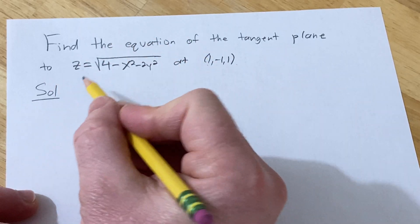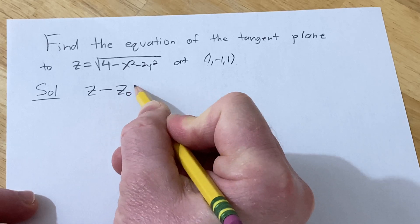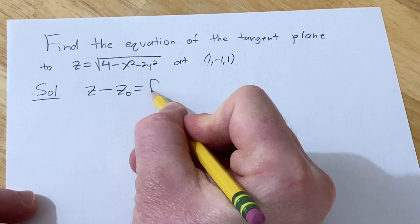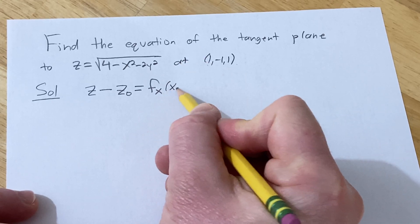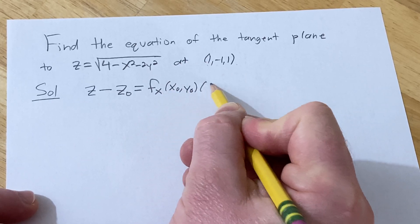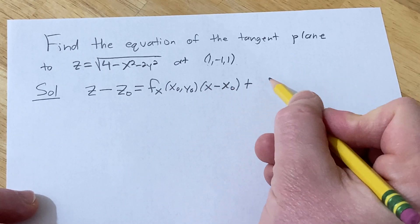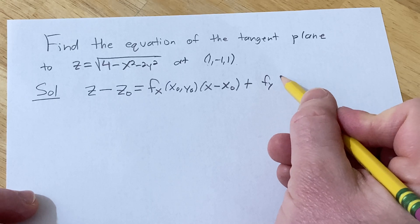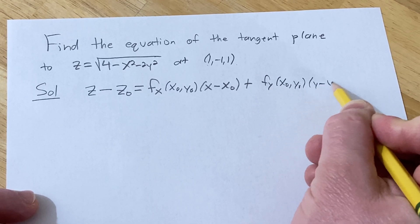So the formula we're going to use is z minus z0 equals the partial derivative of f with respect to x at (x0, y0) times (x minus x0) plus the partial derivative of f with respect to y at (x0, y0) times (y minus y0).